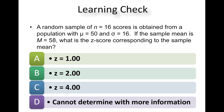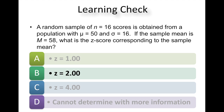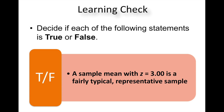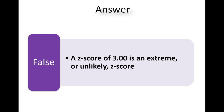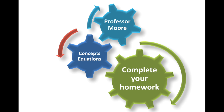Learning check: a random sample of 16 scores is obtained from a population with a mu of 50 and a standard deviation of 16. If the sample mean is 58, what is the z-score corresponding to that sample mean? Do your two-step process — first find your standard error, then throw it into your modified z equation — and you get a z of 2. True or false: a sample mean with a z-score of 3 is a fairly typical representative sample? No — a z-score of 0 would be typical. A z-score of 3 is extreme or very unlikely. Please remember to do your homework and contact me with any questions.